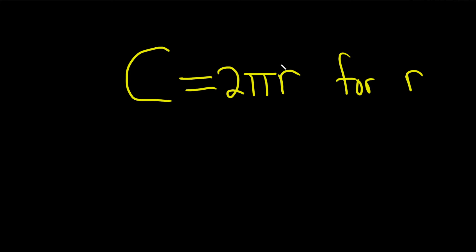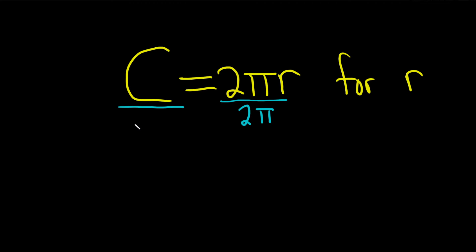The r is being multiplied by 2π. So because it's being multiplied, to undo the multiplication, you use division. To show your work, you draw a line and put the 2π here. But what you do to one side, you do to the other — so you draw the line over here and also put a 2π here.